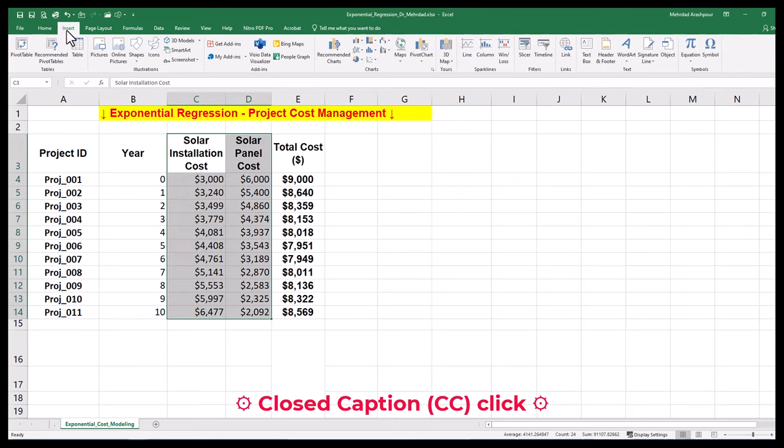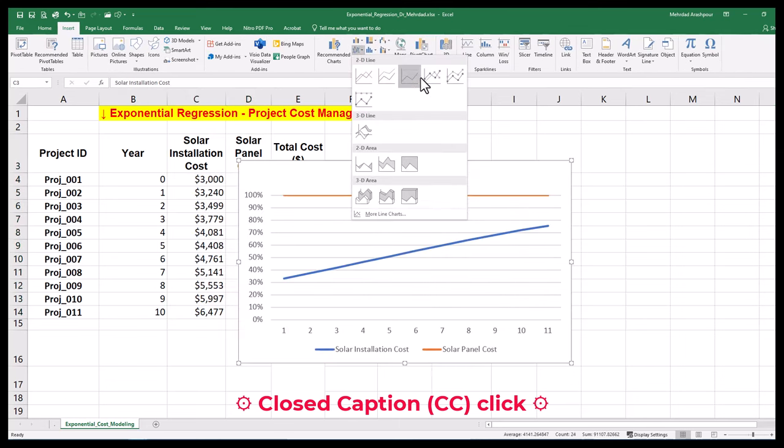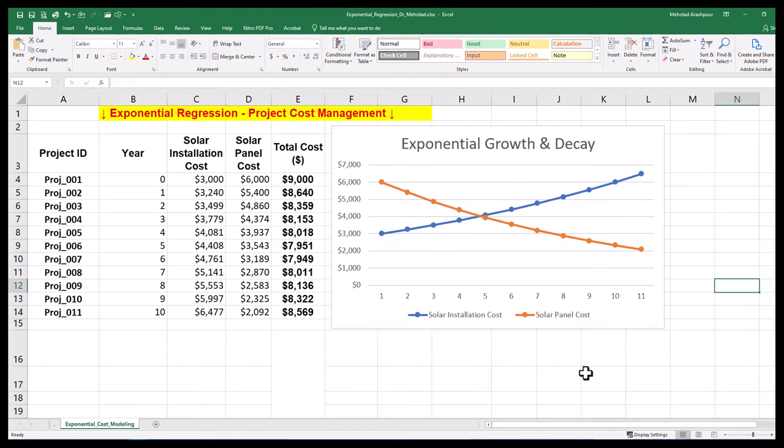To investigate trends in our data, we can create a line plot with markers by selecting two columns of cost data. As you can see, installation costs are exponentially growing and panel costs are decaying. Using this plot visualization, we can also estimate the intercepts or constant coefficients for our exponential models.